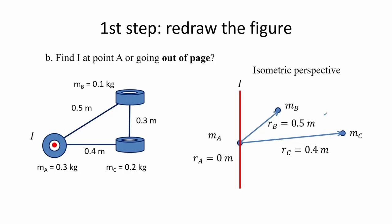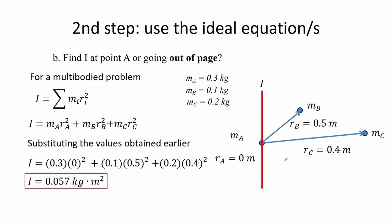For letter B, the moment of inertia is at point A, or at the same position as mass A but out of the page. Redrawing the figure in isometric view, the distance R for mass A is zero since it lies directly on the axis of rotation. However, mass B is at R_B equals 0.5 meters and mass C is at R_C equals 0.4 meters from the axis. Using the same equation, the moment of inertia at point A out of page equals 0.057 kilogram meters squared.